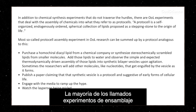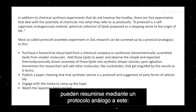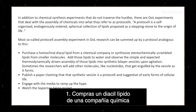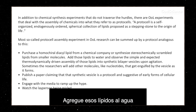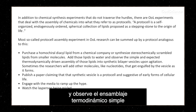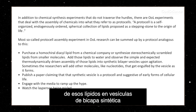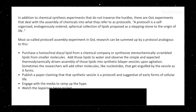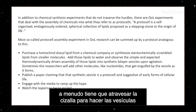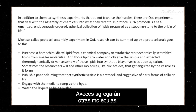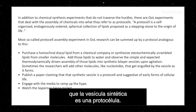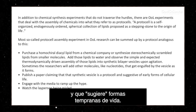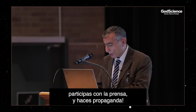Most so-called protocell assembly experiments in origin of life research can be summed up by a protocol like this: you purchase homochiral diacyl lipids from a chemical company, or synthesize stereo-scrambled lipids from smaller molecules; add those lipids to water and observe the simple and expected thermodynamically driven assembly into a synthetic bilayer vesicle upon agitation — often having to go through shear to make the vesicles; sometimes adding other molecules like nucleotides that get engulfed by the vesicle as it forms; then publish a paper claiming that synthetic vesicle is a protocell suggestive of early forms of cellular life; engage with the media; watch the layperson be misled.